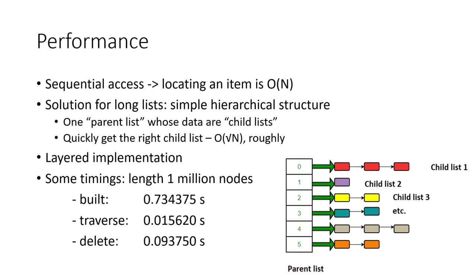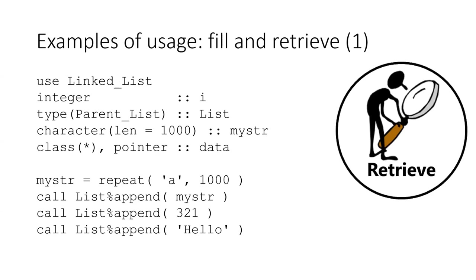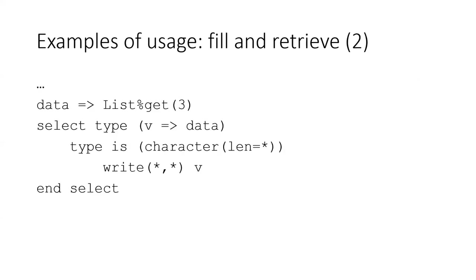To give an example of how you would use this, here is a straightforward linked list. I fill it via append — one of the functions you can use for that. I fill it with a string, then an integer number, and again a string. So you can see that in the same list, different types of data can be stored. To retrieve it, you have a get function. What you get back is a class(*) — a polymorphic pointer — so you have to decide what kind of data type is behind that. Then you can, say, print the value or do other things with it.